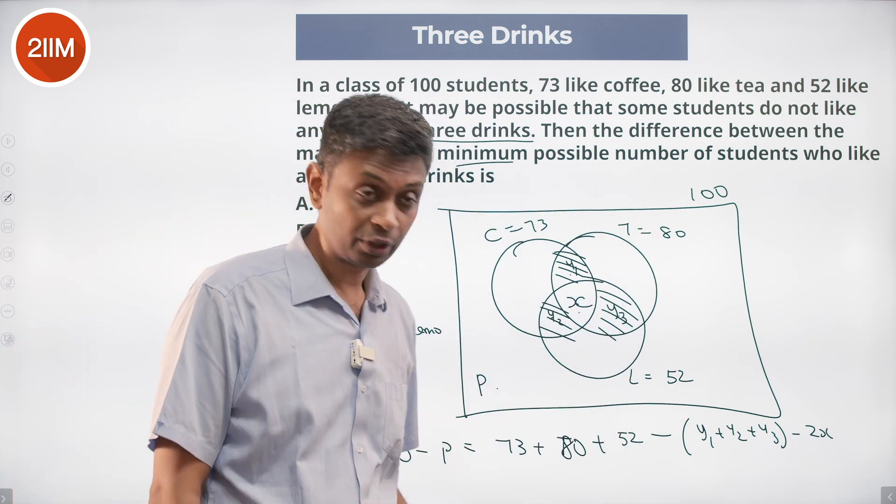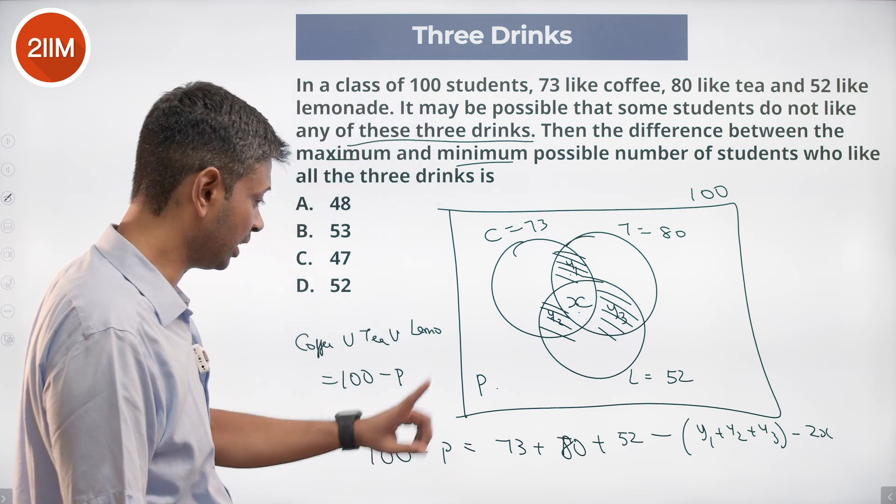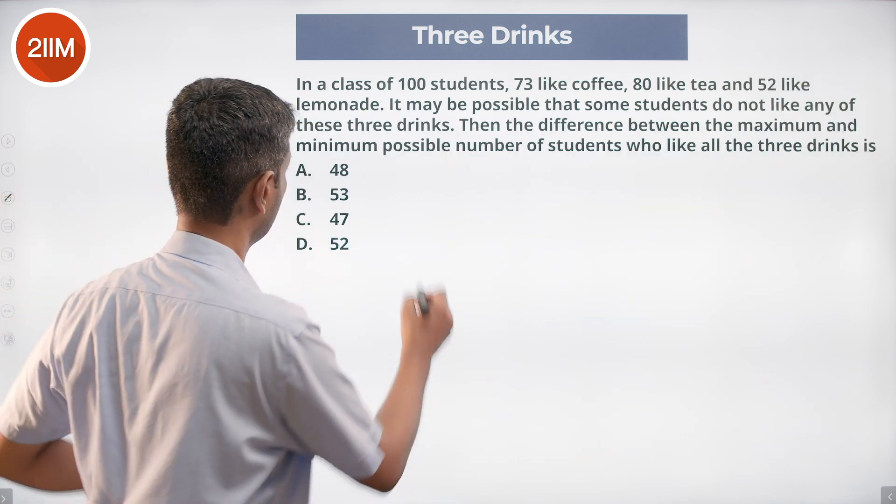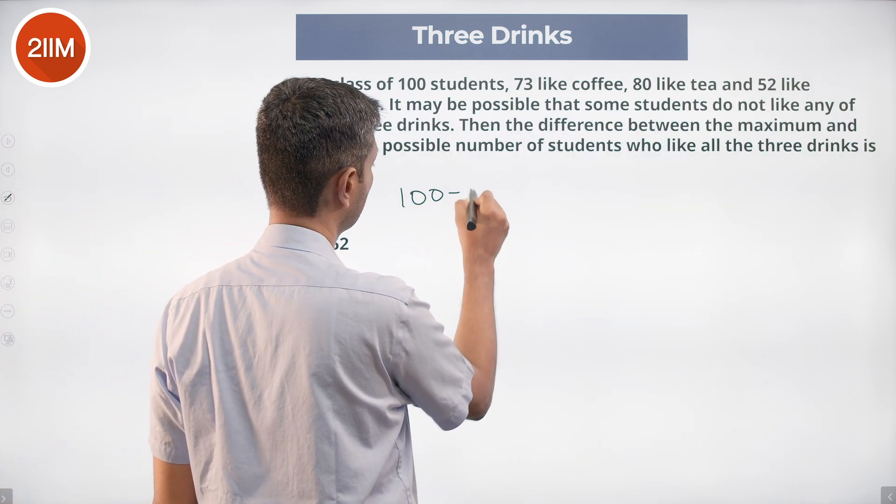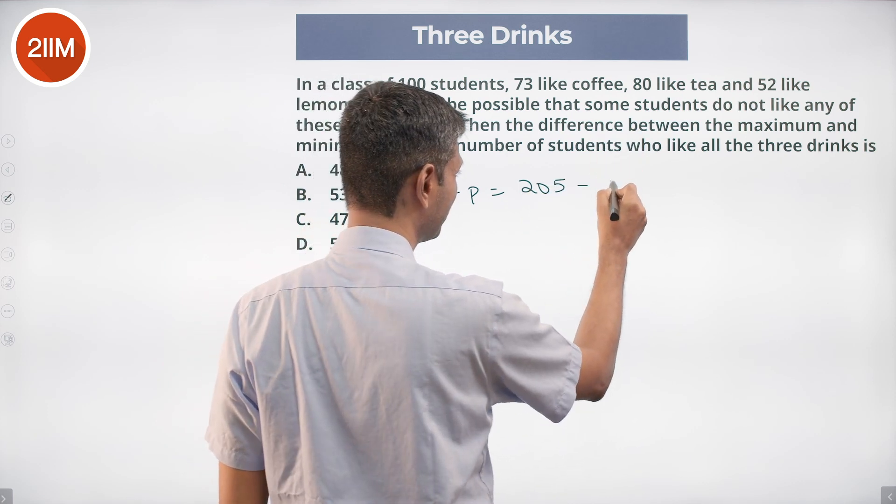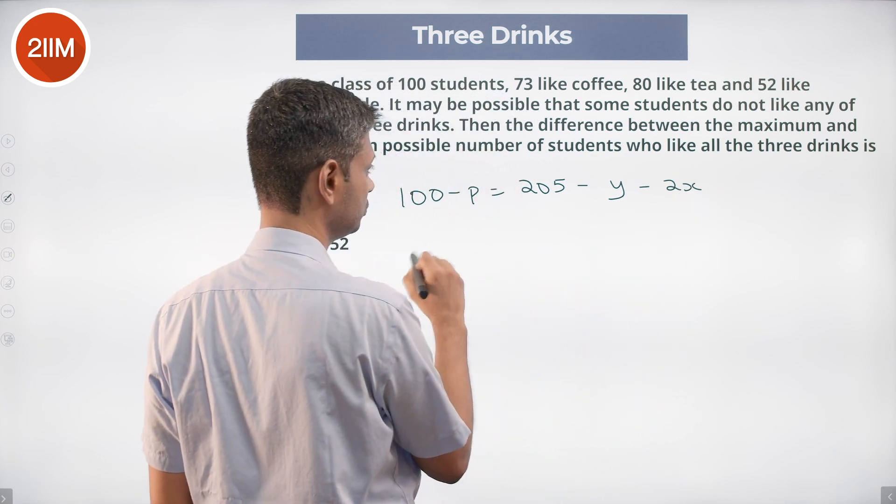73 plus 80 plus 52 is 205. We already found that out, so 205 minus 100 is 105. So I'm going to write this equation again: 100 is 105 minus that y1 plus y2 plus y3, I'm calling it as y, minus 2x. Or 2x plus y minus p is 105.